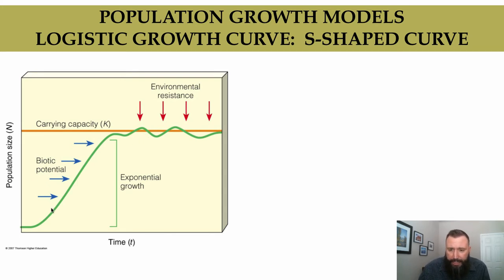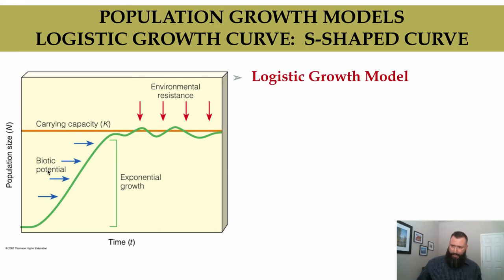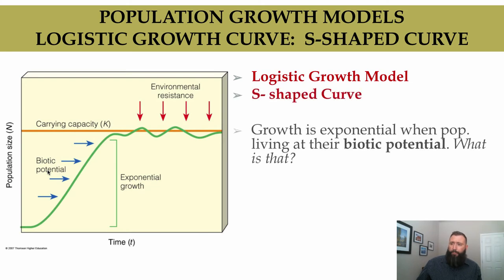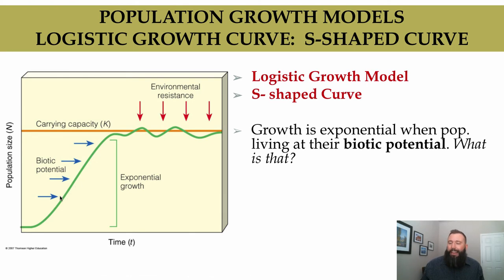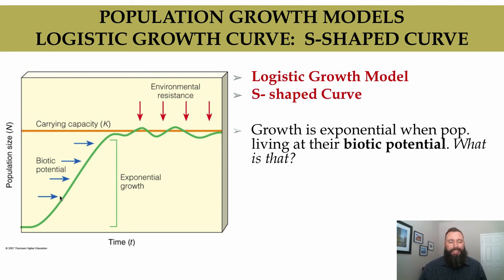The logistic growth model is shown by this green line, which kind of looks like the letter S — it's called an S-shaped curve, or sigmoidal curve. We see exponential growth in the very beginning of the logistic growth model, as the population is growing and living at its biotic potential. Biotic potential is the maximum reproductive capacity of a population under optimum environmental conditions.